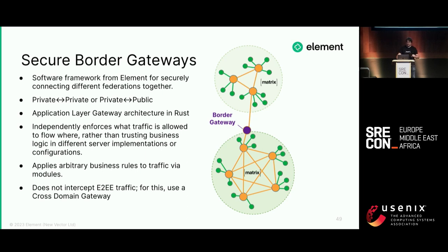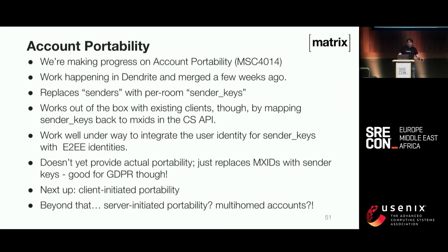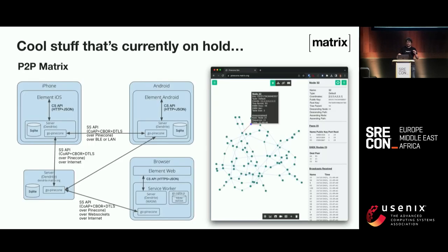Secure border gateways are similar but software-based and don't man-in-the-middle the encryption — they are just for metadata. Element also has a Kubernetes operator-based enterprise distribution that packages up HA and elastic scaling with a bunch of other commercial bolt-ons. Other stuff going on: account portability — a big missing feature that things like Bluesky have, and we're adding it. Peer-to-peer Matrix is on hold but really cool — we just put Dendrite inside the app, and you have a mesh network over AirDrop or Bluetooth Low Energy using an overlay network we created called Pinecone.